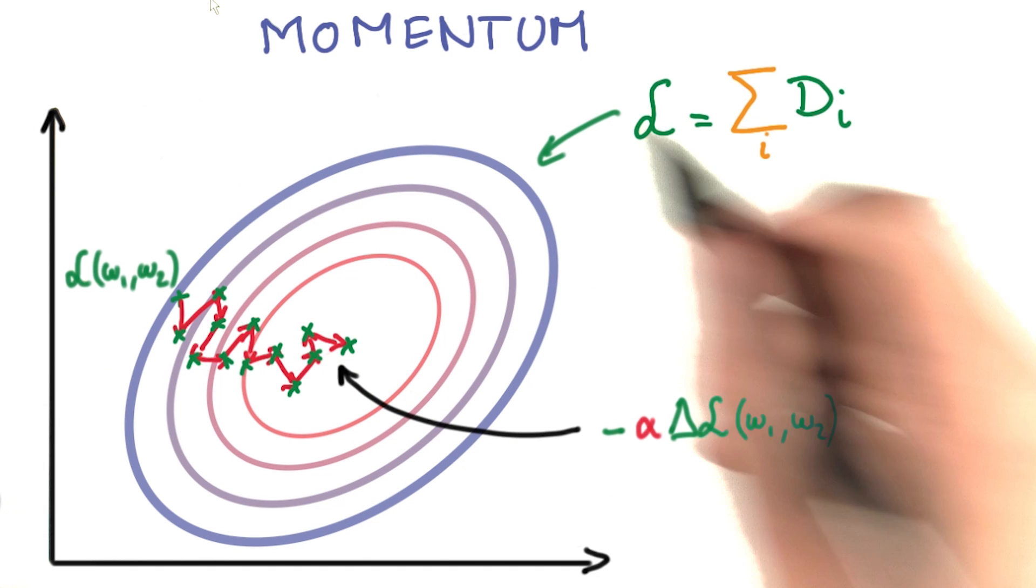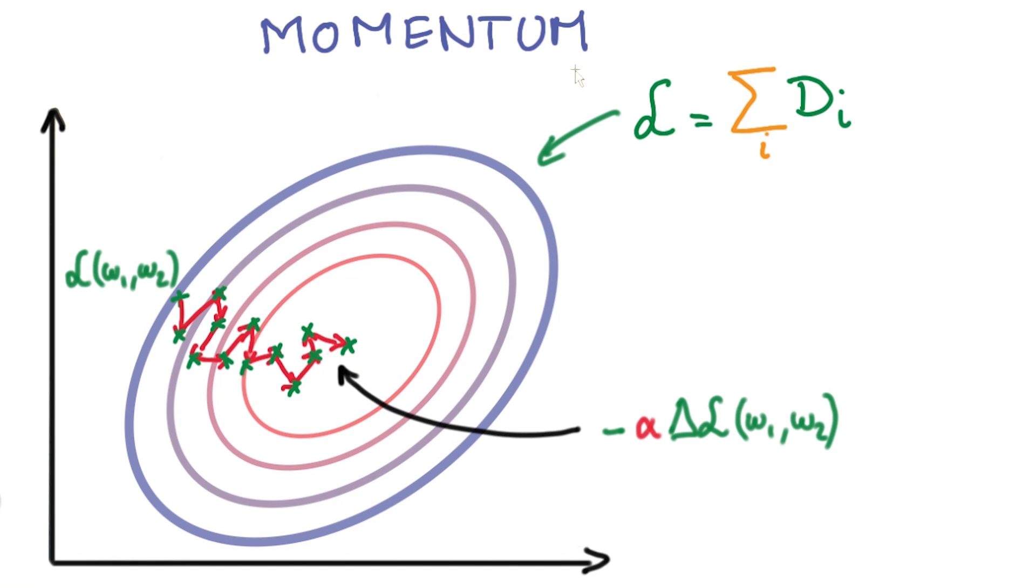The first one is momentum. Remember that at each step, we're taking a very small step in a random direction. But that on aggregate, those steps take us towards the minimum of the loss.